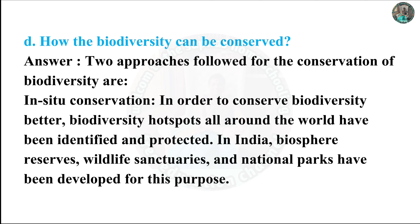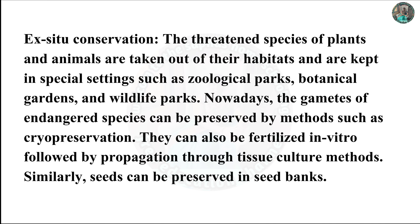D. How can biodiversity be conserved? Two approaches followed for the conservation of biodiversity are: In-situ conservation — biodiversity hotspots all around the world have been identified and protected. In India, biosphere reserves, wildlife sanctuaries, and national parks have been developed for this purpose. Ex-situ conservation — threatened species of plants and animals are taken out of their habitats and kept in special settings such as zoological parks, botanical gardens, and wildlife parks. The gametes of endangered species can be preserved by methods such as cryo-preservation. They can also be fertilized in vitro, followed by propagation through tissue culture methods. Similarly, seeds can be preserved in seed banks.